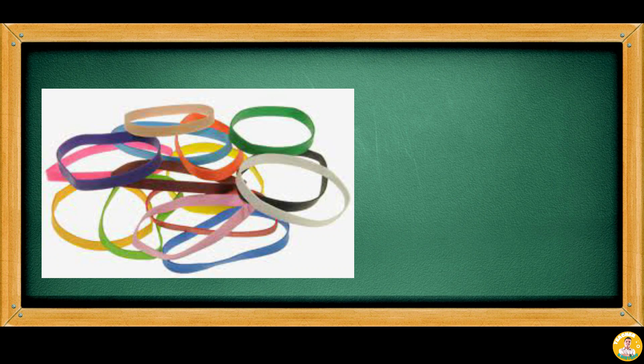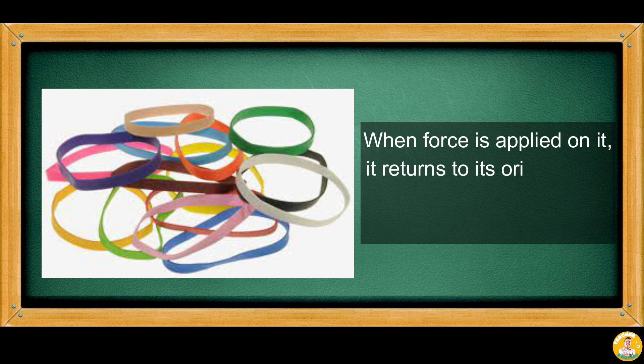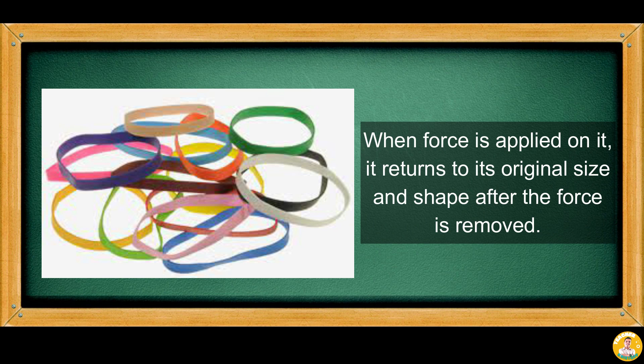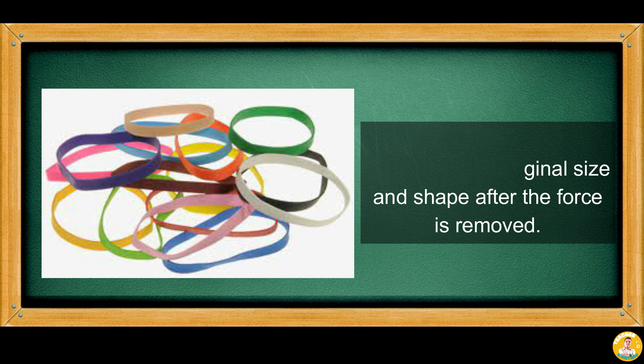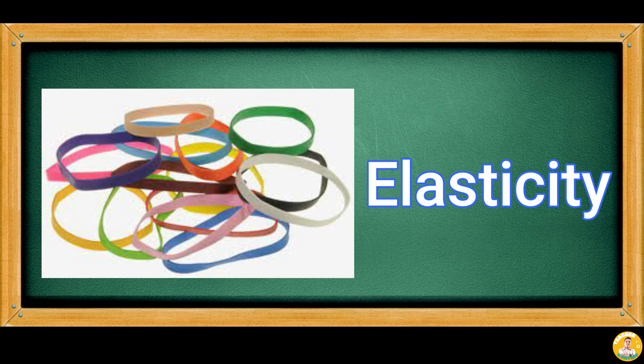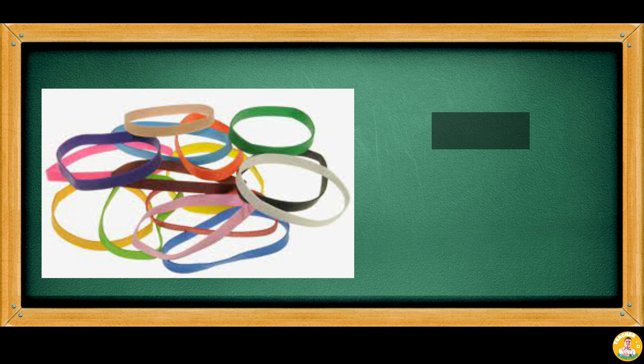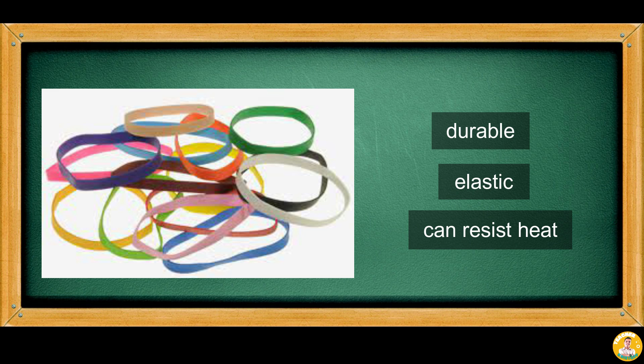Unlike plastic materials, rubber bands are elastic. When force is applied on it, it returns to its original size and shape after the force is removed. This property is elasticity. Rubber is durable, elastic, and can resist heat. This makes rubber an excellent material in making tires for land vehicles.